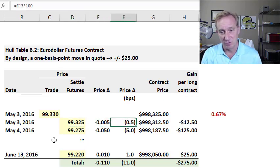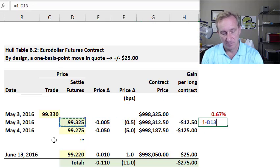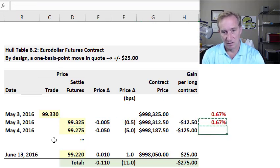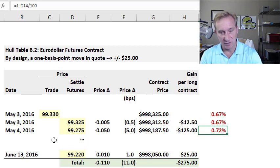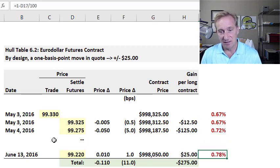These are in yellow because they could be anything. You can see the 99.33 immediately moves down to 99.325, then to 99.275, and finally settling at 99.22.